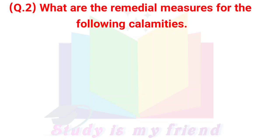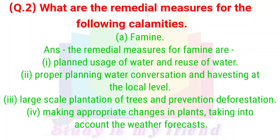Question 2: What are the remedial measures for the following calamities? A) Famine. Answer: The remedial measures for famine are: 1. Planned usage of water and reuse of water. 2. Proper planning of water conservation and housing at the local level. 3. Large scale plantation of trees and prevention of deforestation.